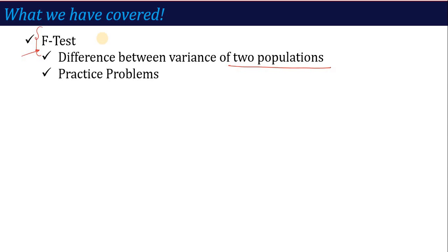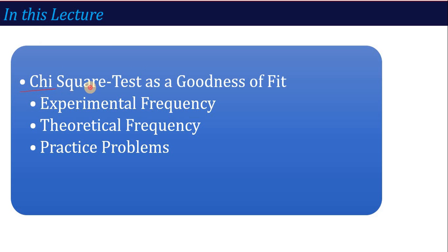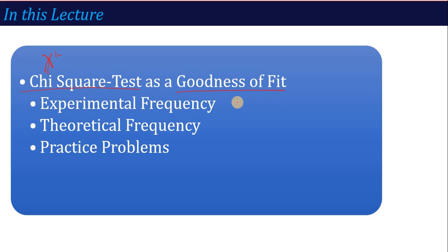In this lecture, we are going to talk about the next test, called the Chi-Square test. The Chi-Square quantity represents the Greek letter chi-square. This test is basically used in two types of applications. We are going to talk about Chi-Square test as a goodness of fit — understanding experimental frequency, theoretical frequency, and on what basis we calculate these two types of frequencies.